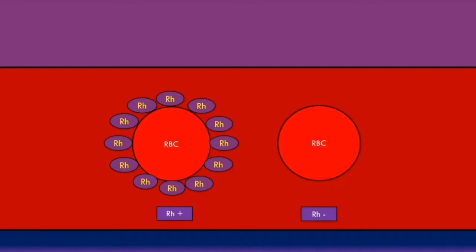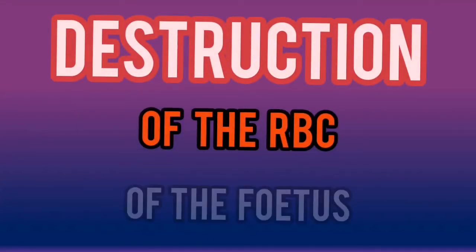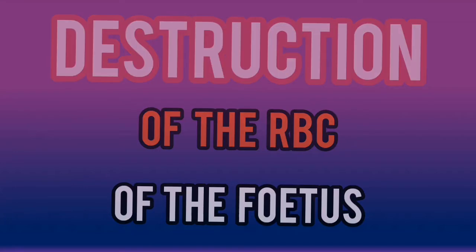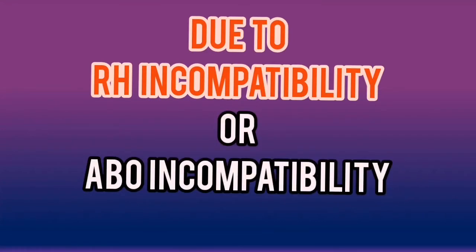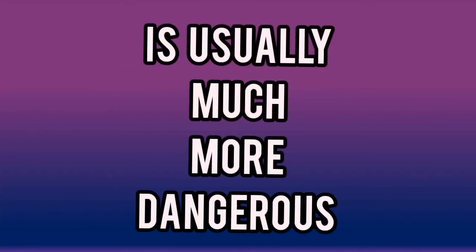Now that we've discussed the rhesus system and the anti-D antibodies, let's now discuss hemolytic disease of the newborn. Hemolytic disease of the newborn, also known as erythroblastosis fetalis, is a condition characterized by blood group incompatibility between the mother and the fetus, leading to destruction of the fetal red blood cells by the mother's antibodies. It can occur due to rhesus incompatibility or ABO incompatibility, but rhesus incompatibility is usually much more dangerous.